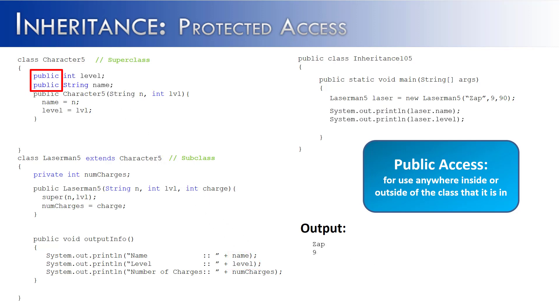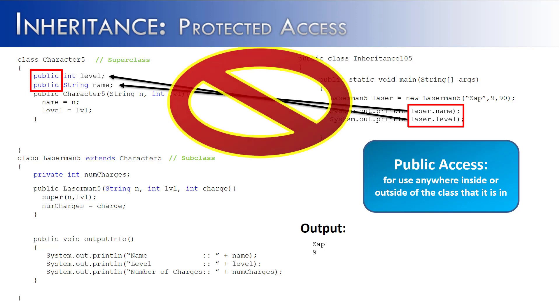But the problem is that public is too much access for us because not only can the subclass access the information, so too can any class that's trying to access level and name. You can see right here we're directly accessing level and name from a class that's not even in the super-sub relationship that Character5 and Laserman5 have. This is a big no-no because it violates encapsulation.